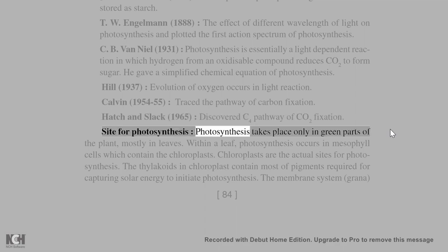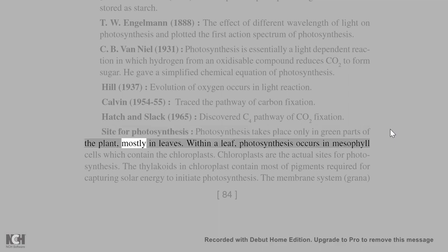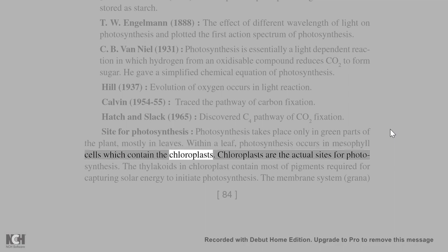Site for photosynthesis: Photosynthesis takes place only in green parts of the plant, mostly in leaves. Within a leaf, photosynthesis occurs in mesophyll cells which contain the chloroplasts. Chloroplasts are the actual sites for photosynthesis.